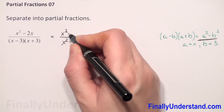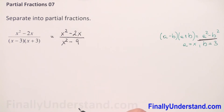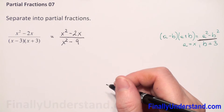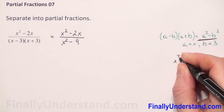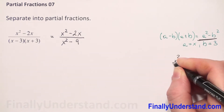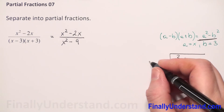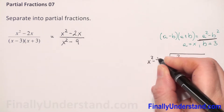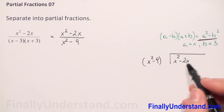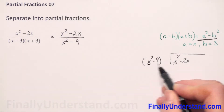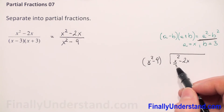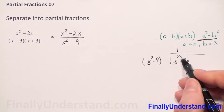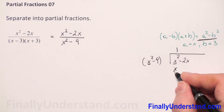Our numerator we have to copy. Now we can do long division, so we have to set up the problem first. We have to divide x squared minus 2x by our divisor x squared minus 9. We always concentrate on the first term. By what do I have to multiply x squared to get x squared? By 1. So 1 times x squared gives me x squared.